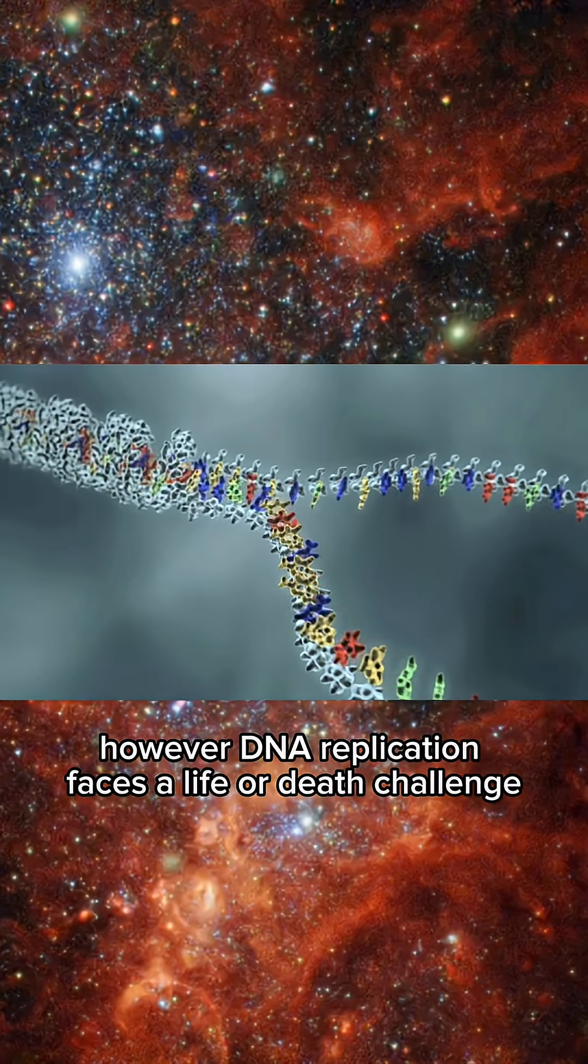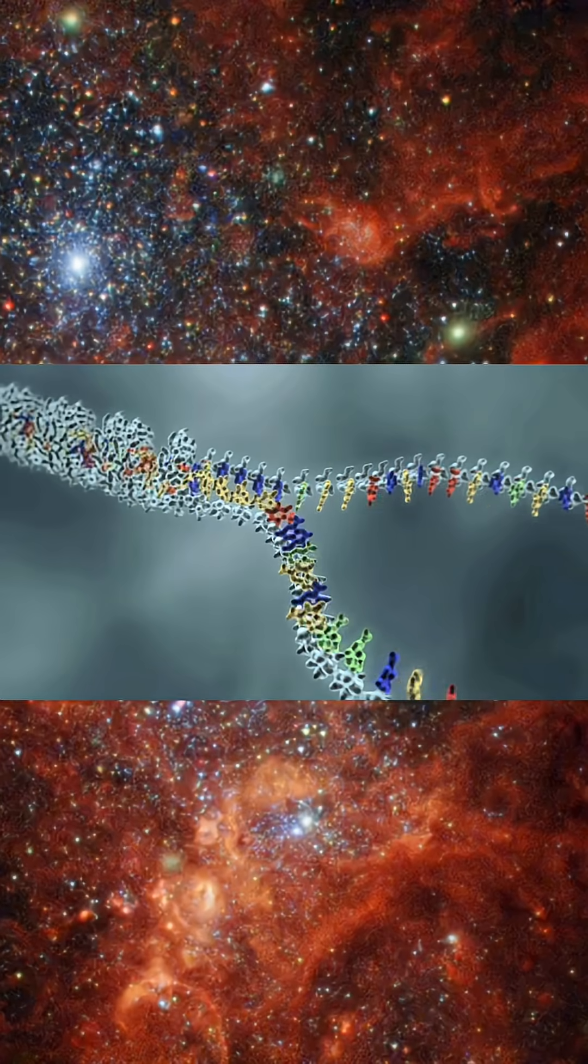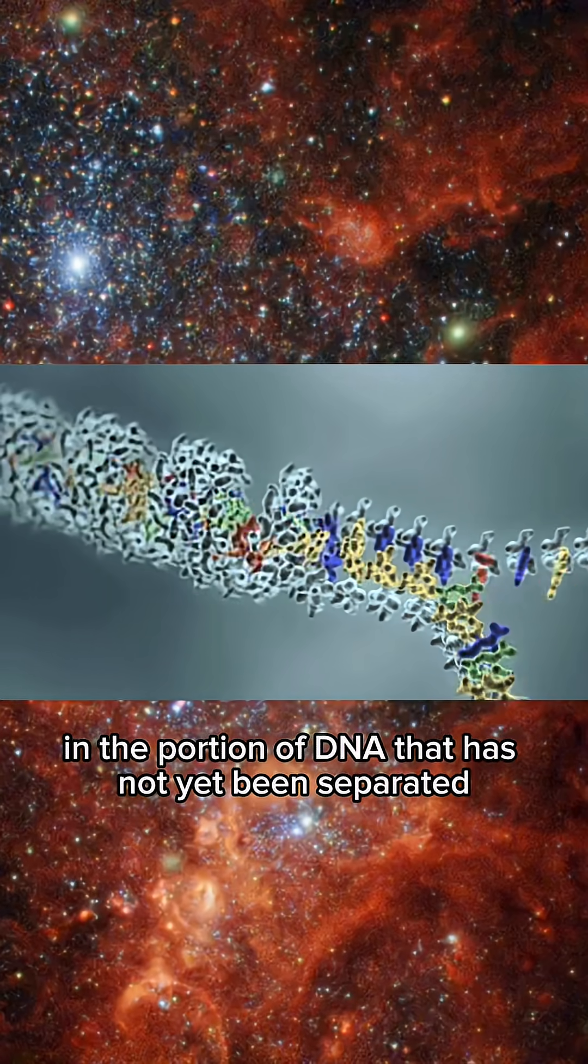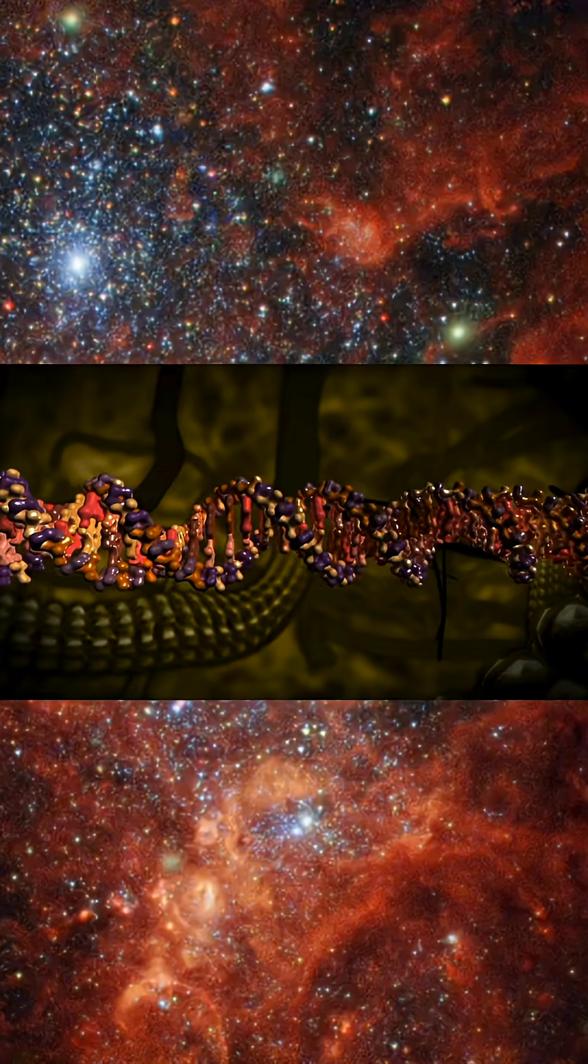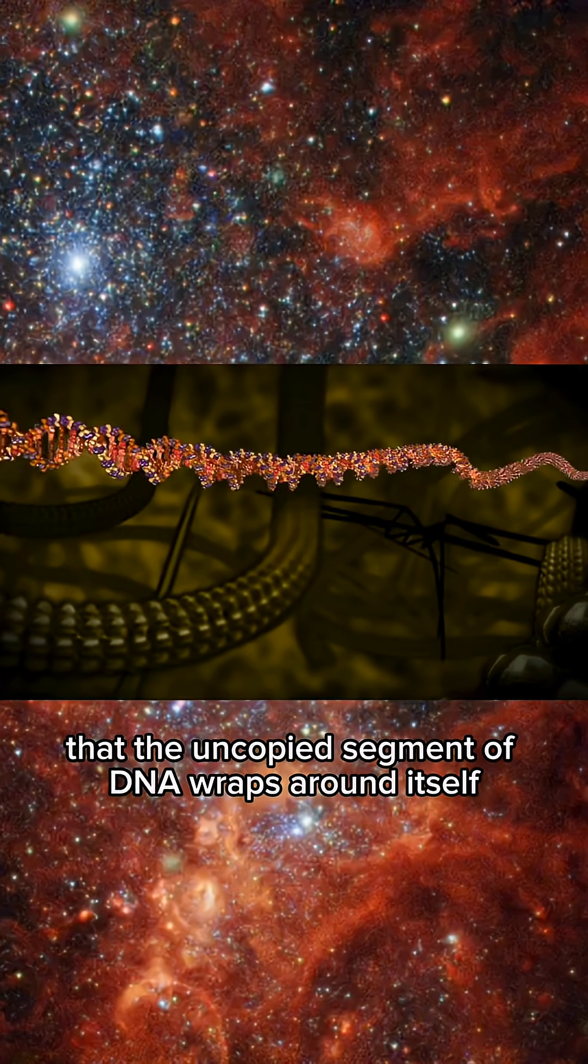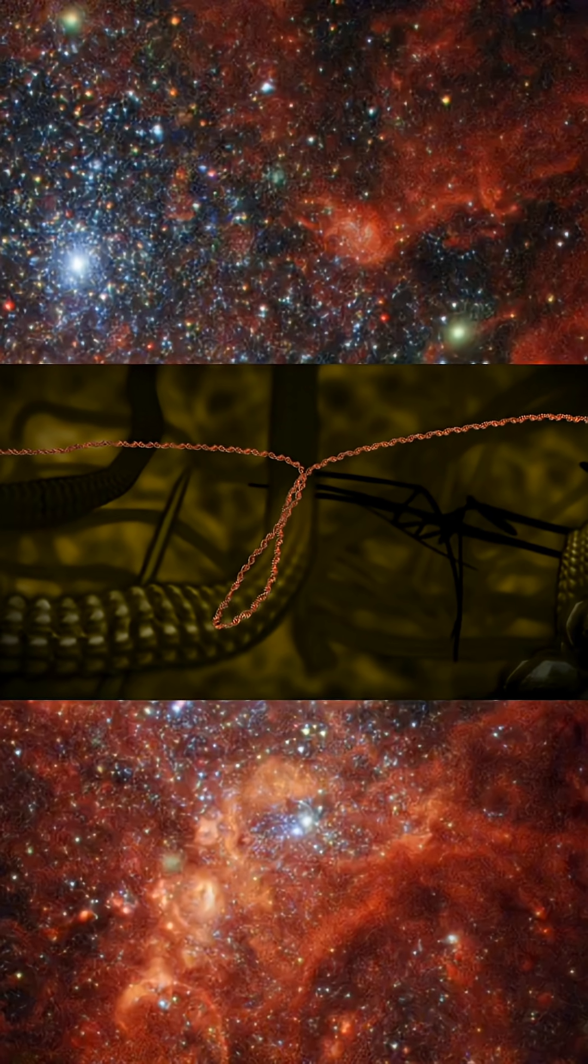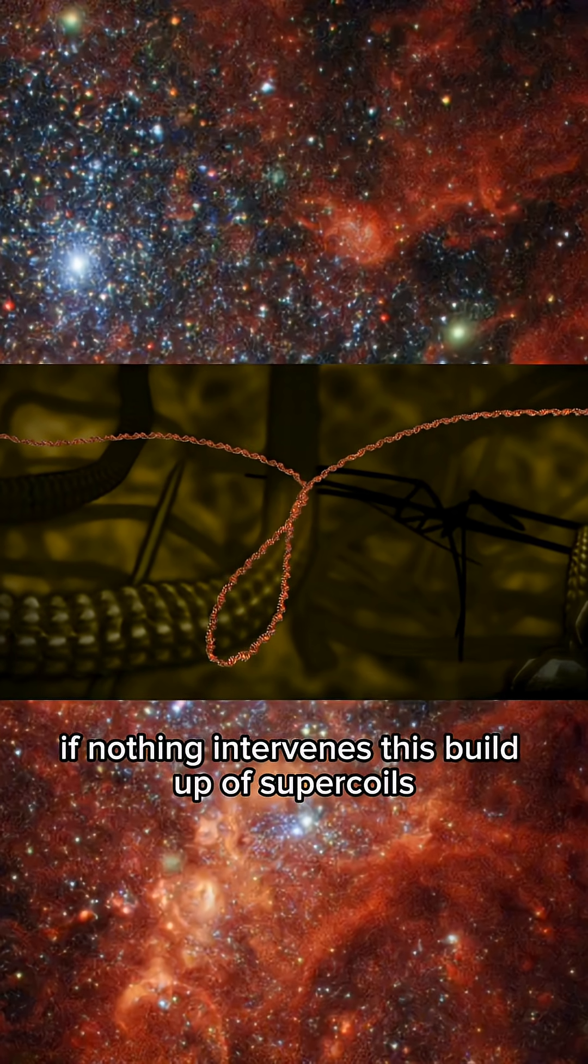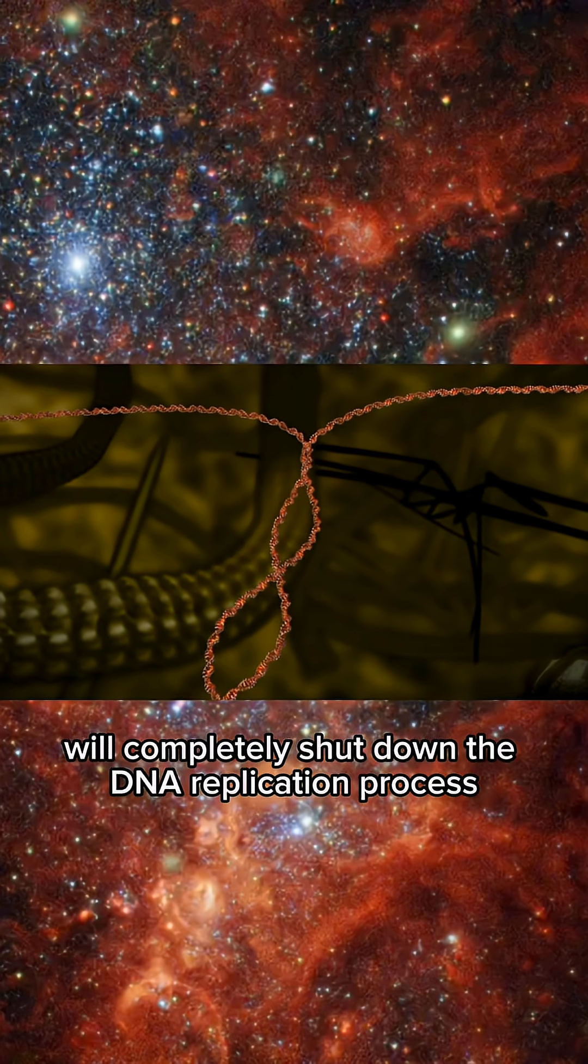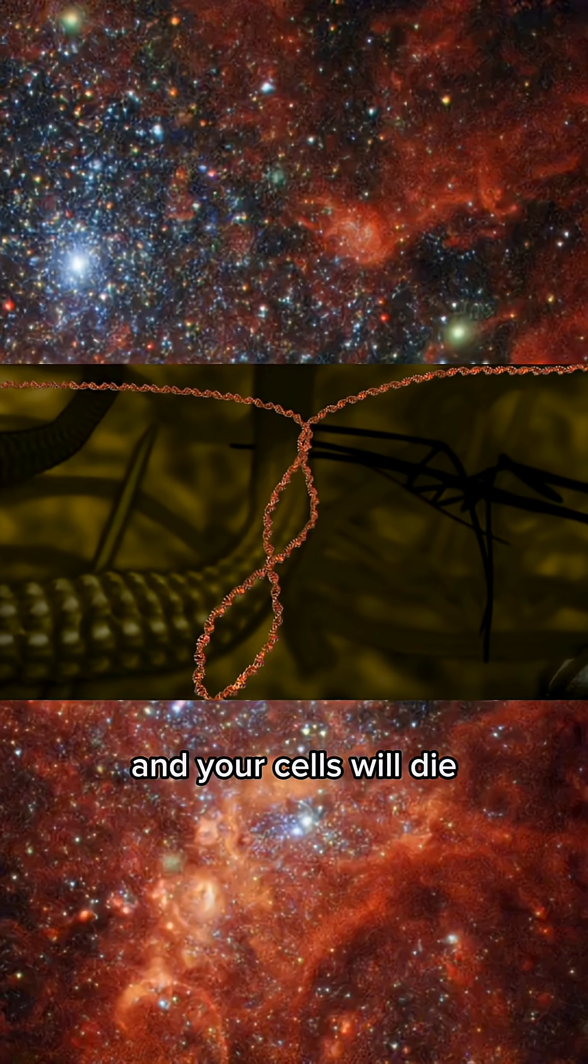However, DNA replication faces a life-or-death challenge before it can complete its mission. Separating the DNA strands causes twisting in the portion of DNA that has not yet been separated. Eventually, the tension from the twisting increases so much that the uncopied segment of DNA wraps around itself in what are referred to as supercoils. If nothing intervenes, this build-up of supercoils will completely shut down the DNA replication process since the two strands can no longer be separated and your cells will die.